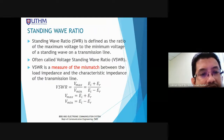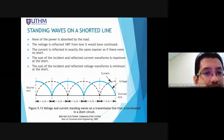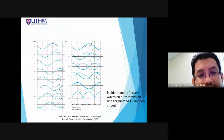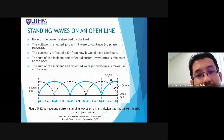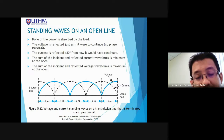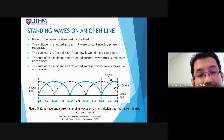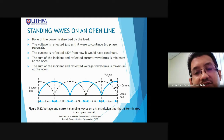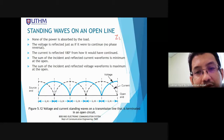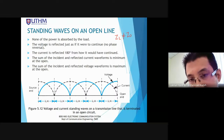So last week, we learned about the standing wave ratio. We learned about these issues. Standing waves occur due to the mismatch in the transmission line. Standing waves happen because the load impedance is not equal to the characteristic impedance.